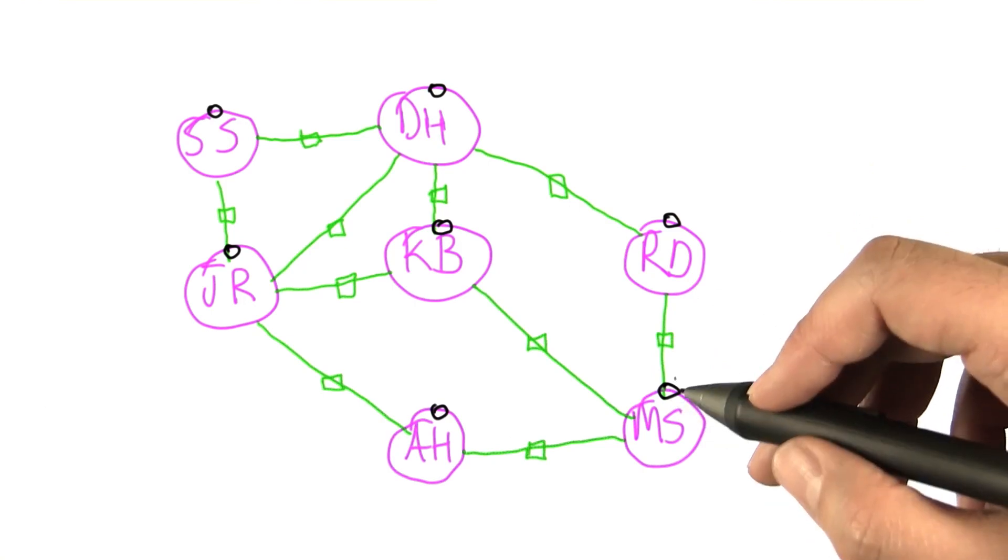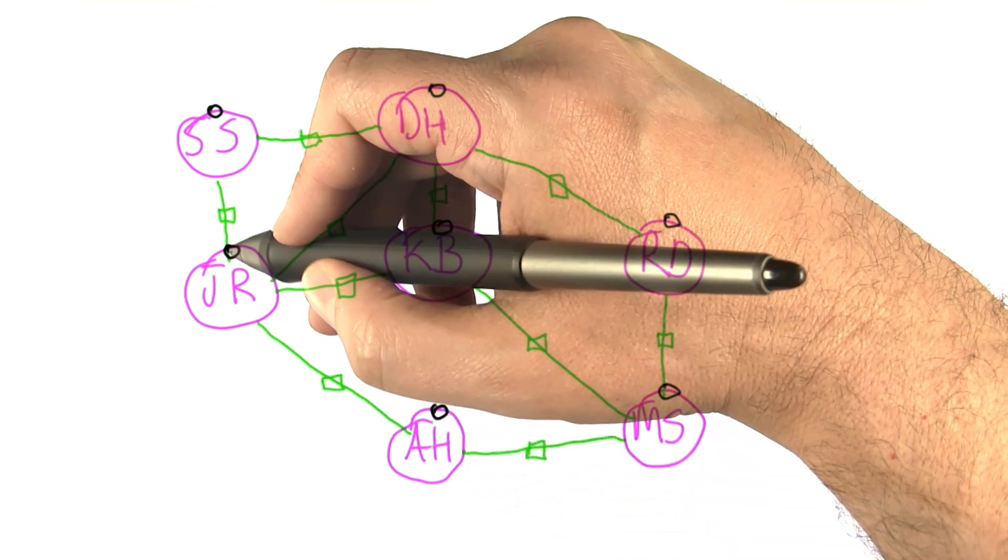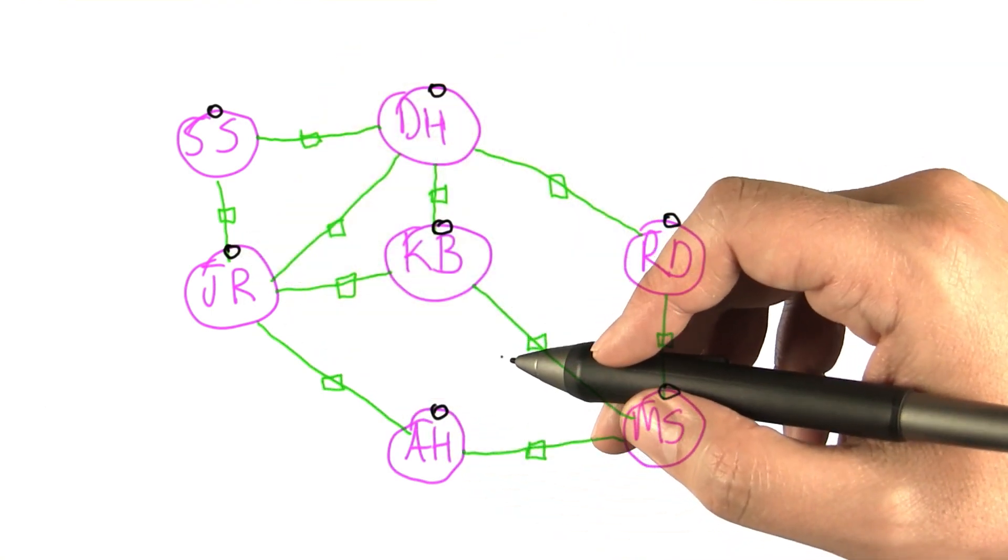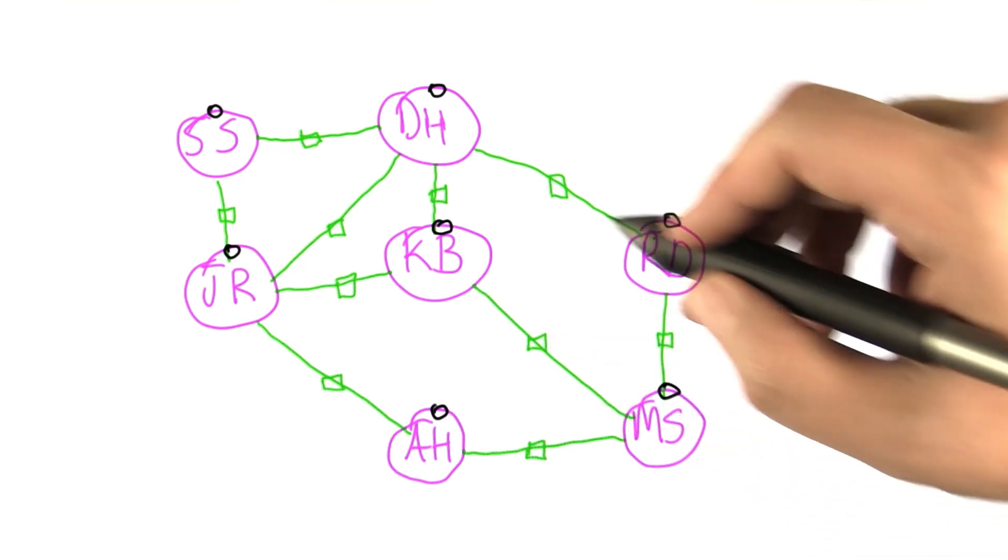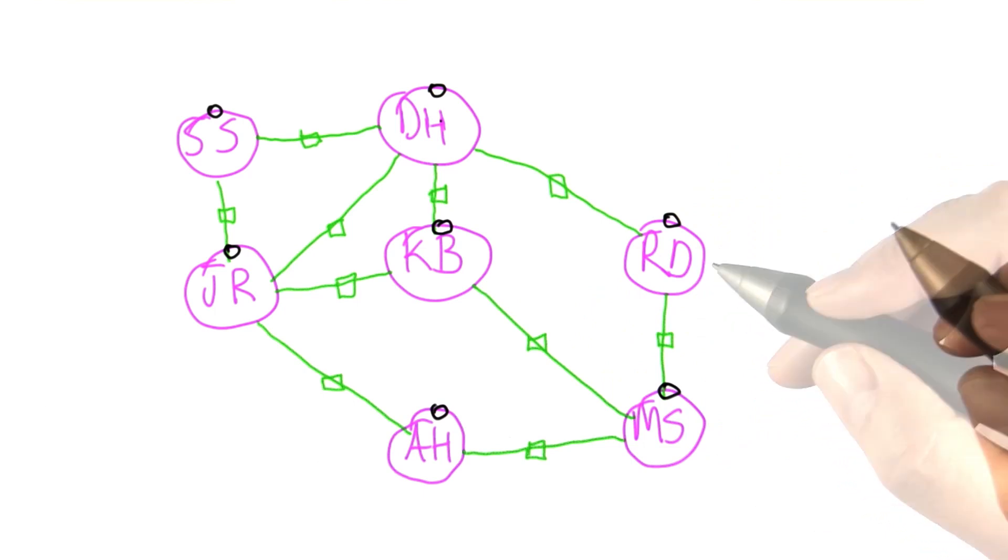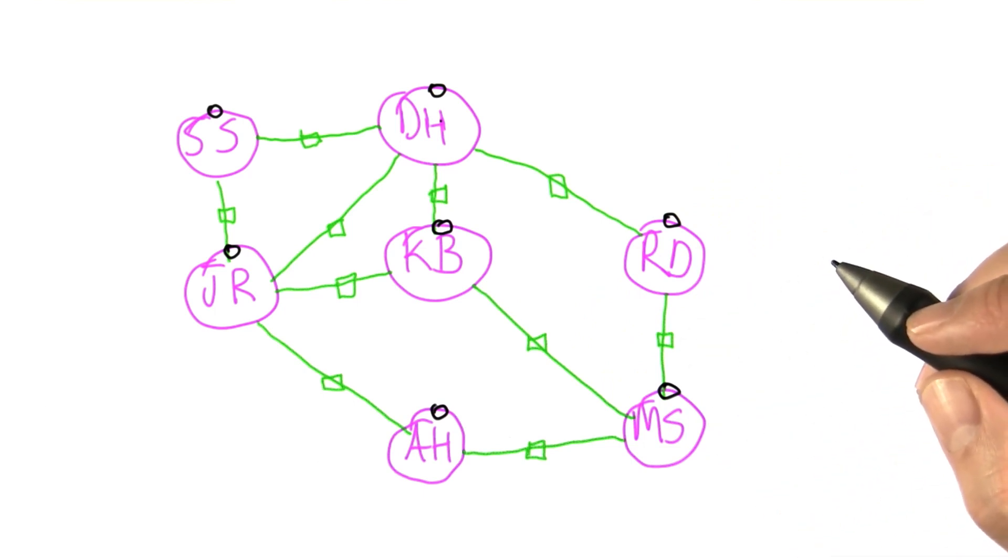And then when you're done, I want you to mark the little bubble corresponding to which actor you end up with. The end of your path. You can follow any path that you want. You just have to make sure that you visit each of the movies once. I'd like you to actually go and do this and check off the actor that you end up with.